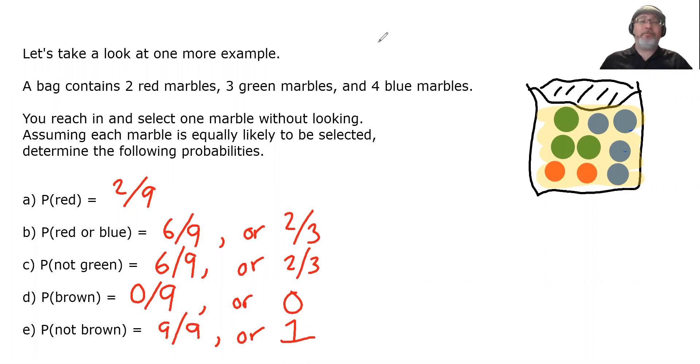But as you can tell, theoretical probability at its core is very straightforward. Here's a bunch of stuff. What fraction of these things have a characteristic? Here's nine marbles. What fraction of them are red? Two ninths. That's the probability you draw a red marble.